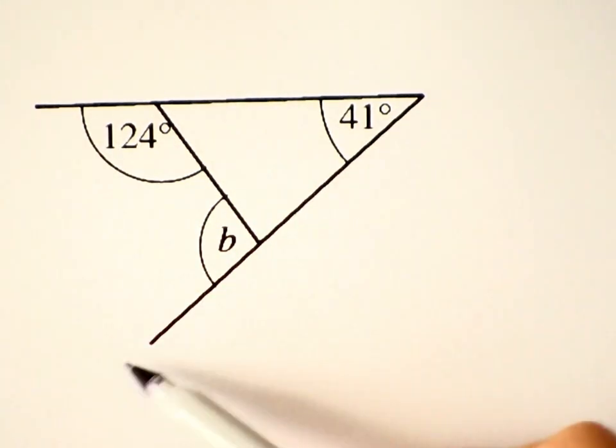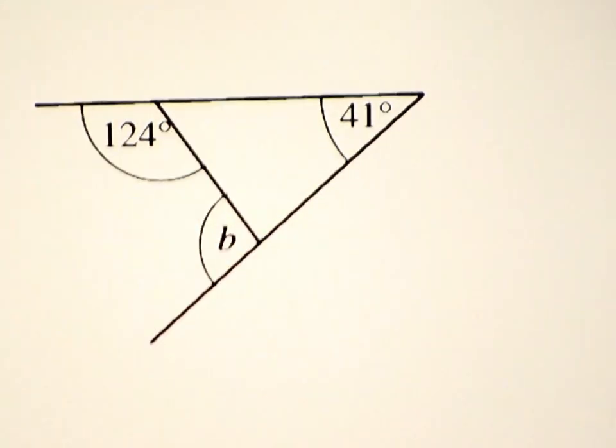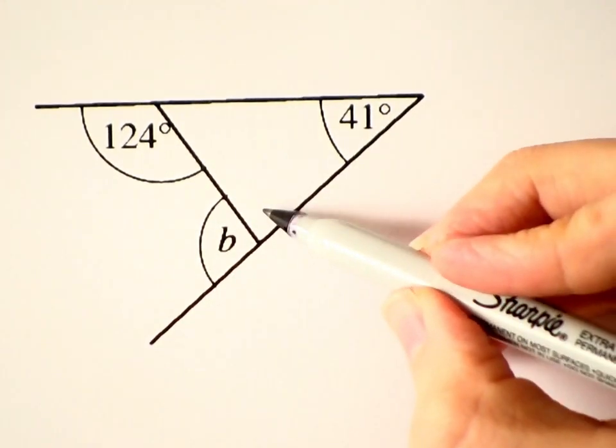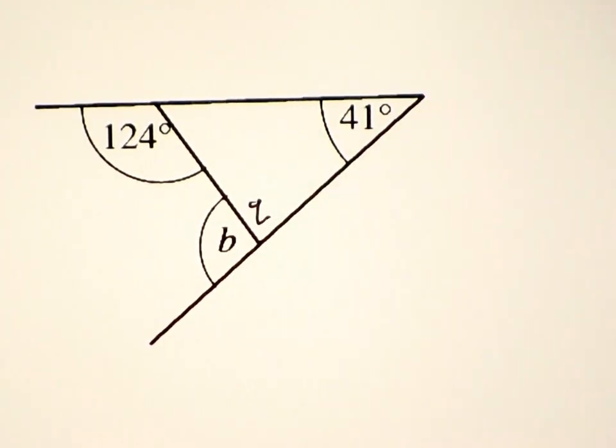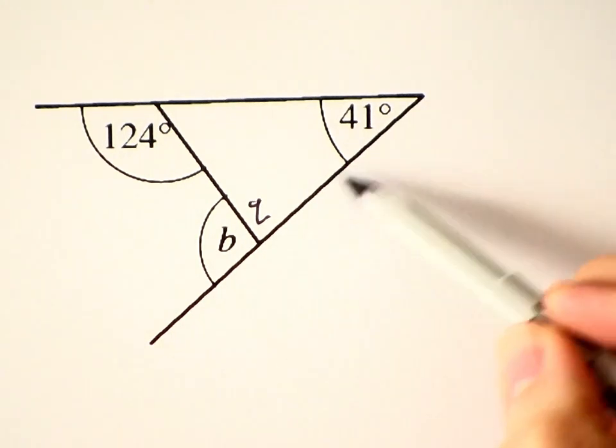These two lines are not parallel, so that won't work. But if I knew this angle, let's give it a name, Q, then B and Q would be supplementary.